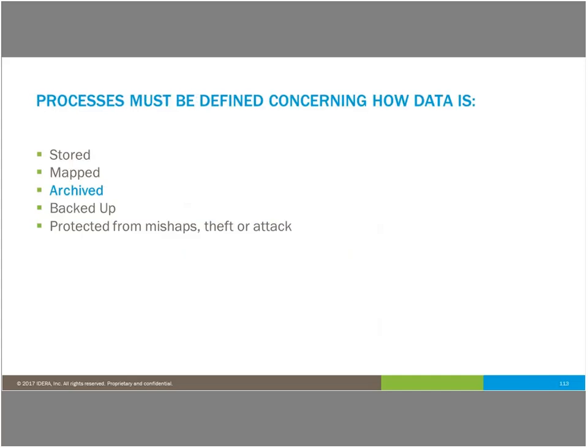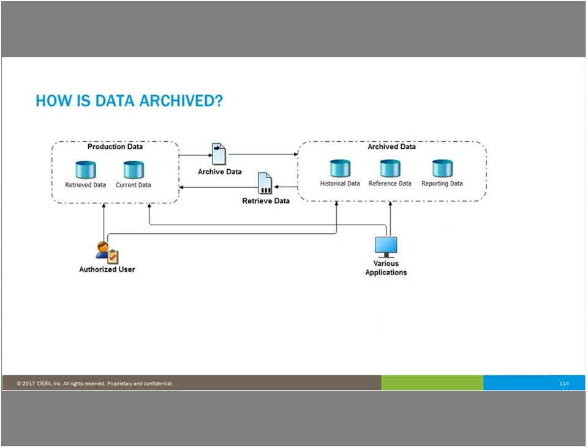Processes need to be defined concerning how data is archived. In this example, I've shown data stores that are in production and data stores that are in archived information, allowing you to do a systems diagram to start the conversation with a business user — I've got all these applications using different information, and users using this information. At what point do we want to archive the data? At what point do we need to bring the data back out of the archive to retrieve it? And what are our different processes? This is the high-level, 10,000-foot view to get the conversation started so that people understand where data is even being placed in the first place.